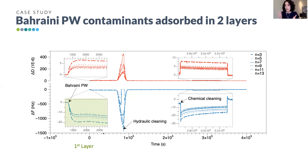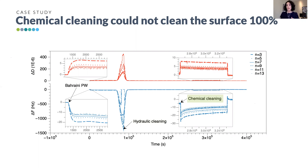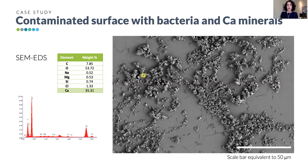Continuing to feed produced water, we observed a second drop — a second layer with much higher mass adsorbing on the sensor. Hydraulic cleaning recovered the alumina surface almost but not completely. Chemical cleaning still did not fully recover the surface after one cycle. At each of these steps — adsorption, hydraulic cleaning, and chemical cleaning — we took a microscopy image of the sensor surface to observe what was present.